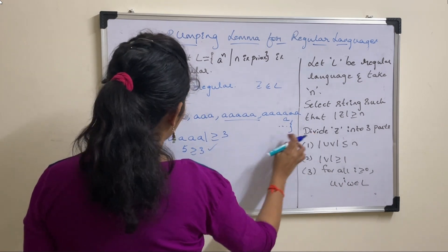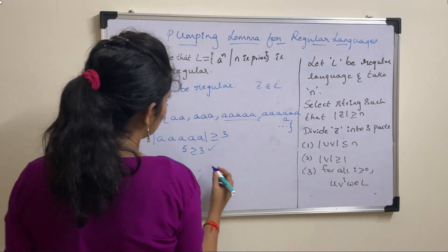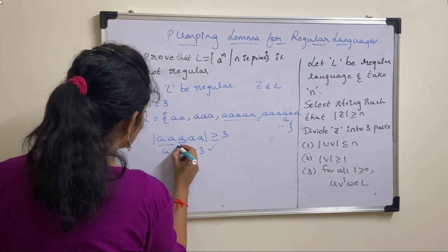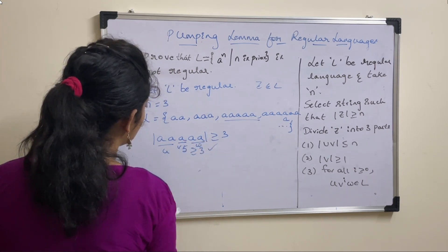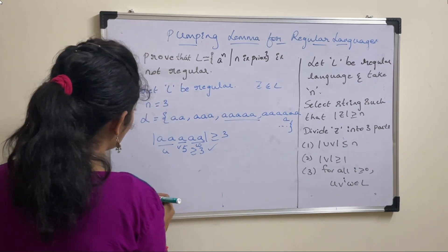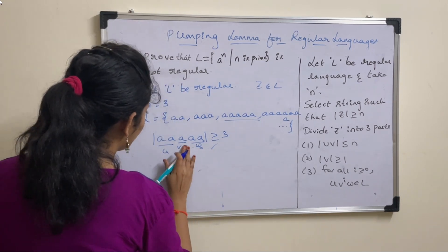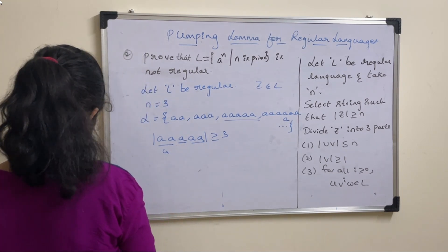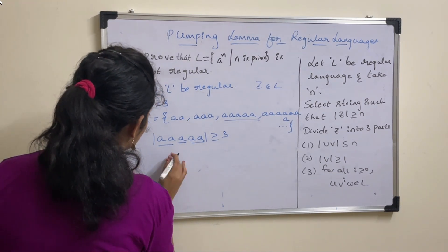5 greater than or equal to 3, condition true. Divide this into 3 parts: U, V, W. Let us take this as U, this as V, this as W. Now, let me write it: U, V, and W.